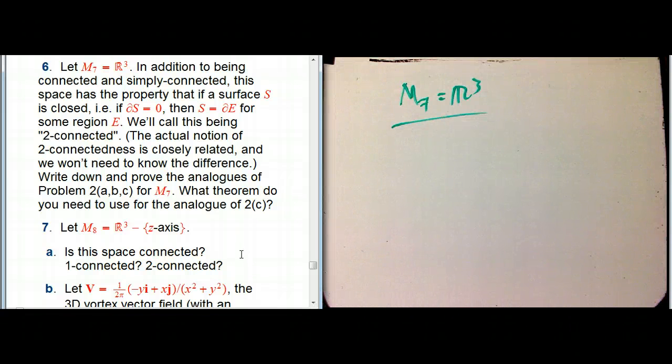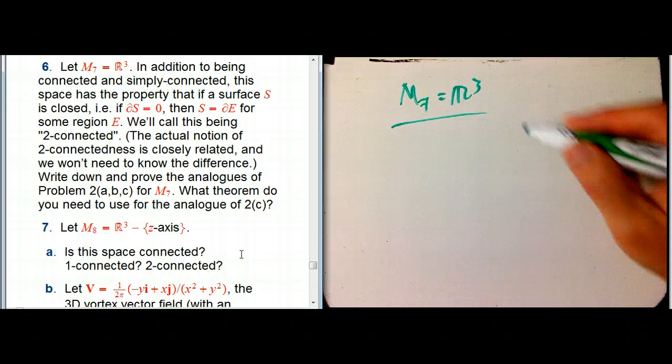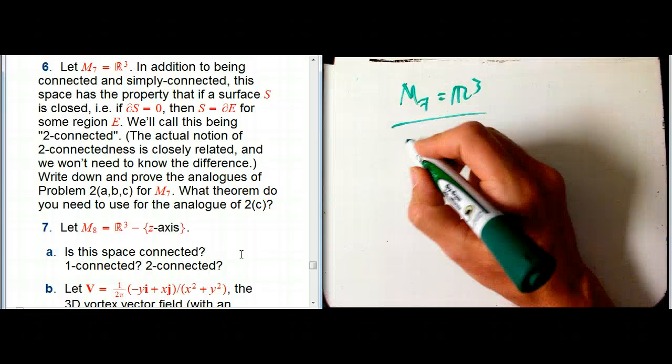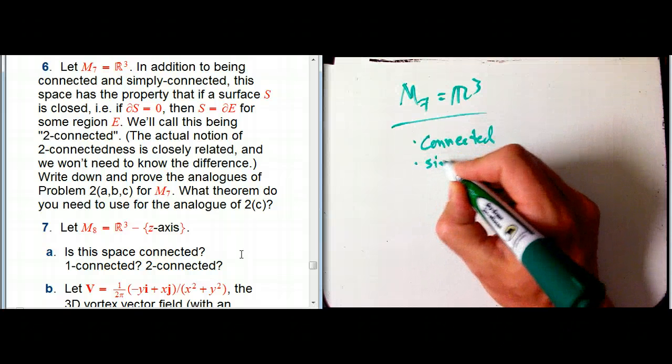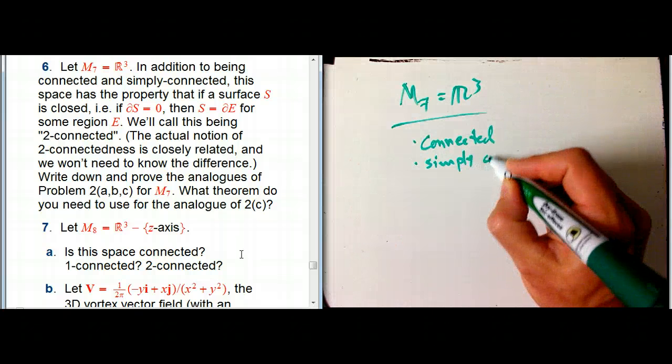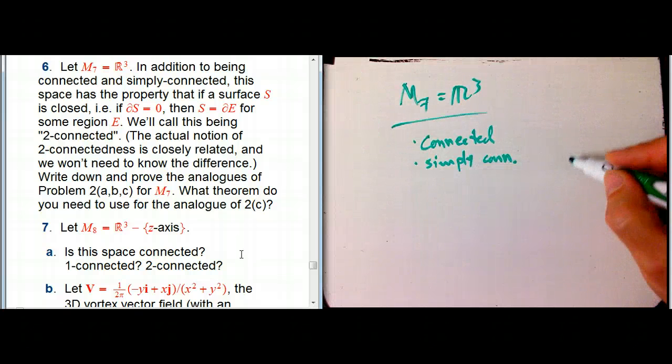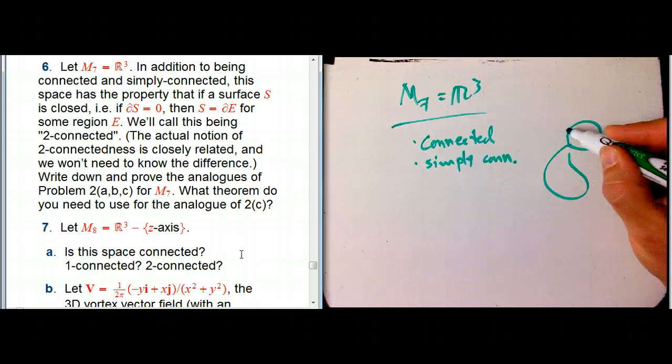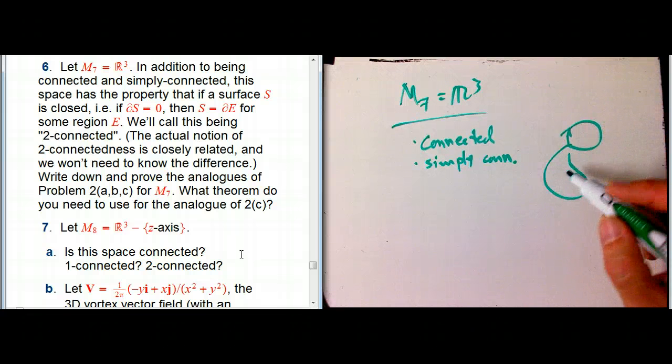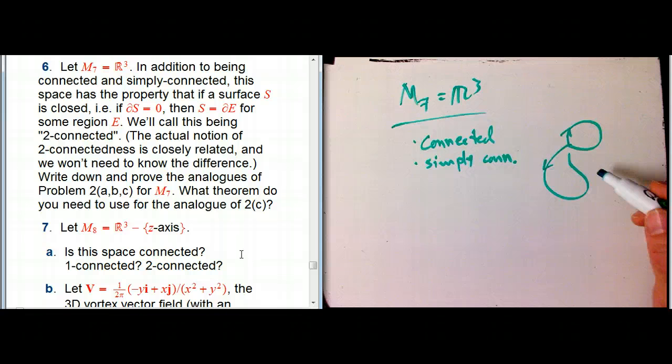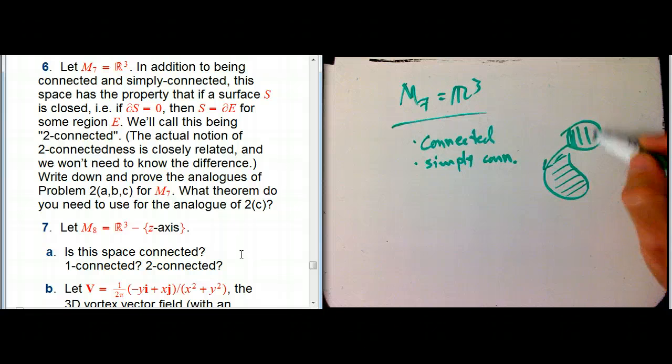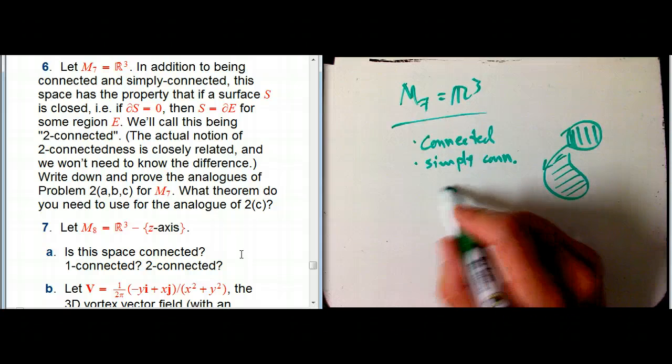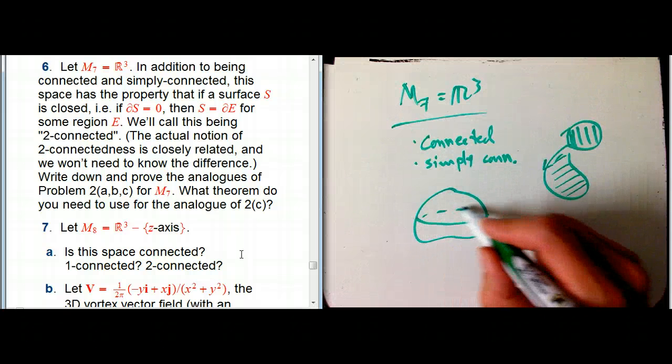Now, we're not going to necessarily use this property real soon, but I wanted to point out, as I say on the left-hand side, it's connected. It's simply connected so that any loop in three dimensions can be contracted to a point, or equivalently, any closed curve you can fill in to be the boundary of something, a surface.